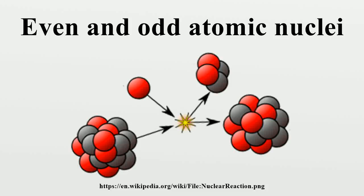In nuclear physics, properties of a nucleus depend on the evenness or oddness of its atomic number Z, neutron number N, and consequently of their sum, the mass number A. Most notably, oddness of both Z and N tends to lower the nuclear binding energy.